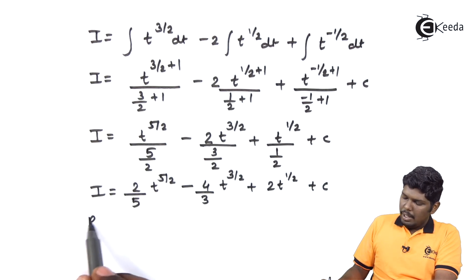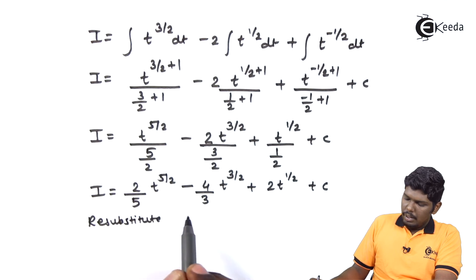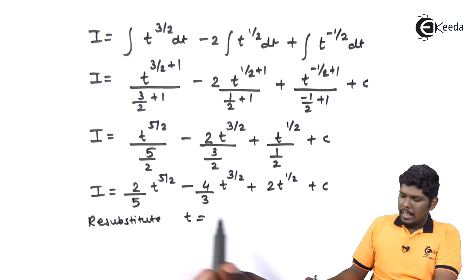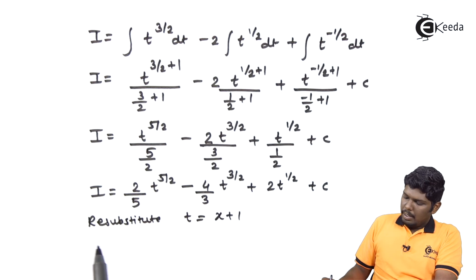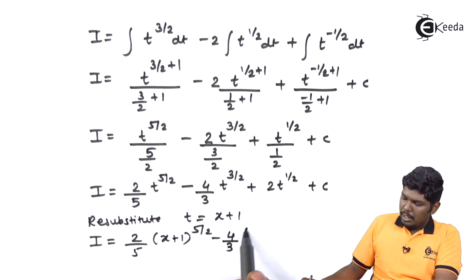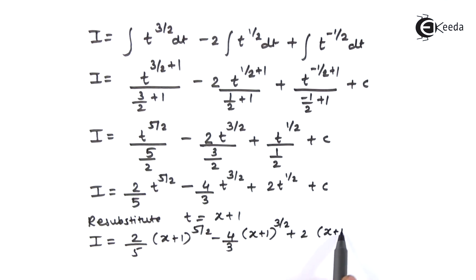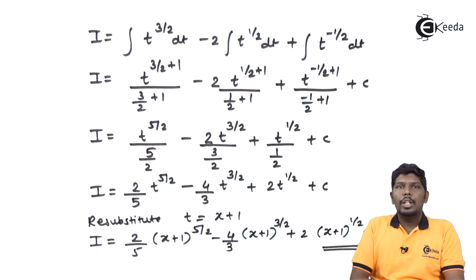In the last step we can resubstitute t as x plus 1, giving the final answer: 2 upon 5 times x plus 1 raised to 5 upon 2, minus 4 upon 3 times x plus 1 raised to 3 upon 2, plus 2 times x plus 1 raised to 1 upon 2, plus c. I hope friends you have understood this problem.